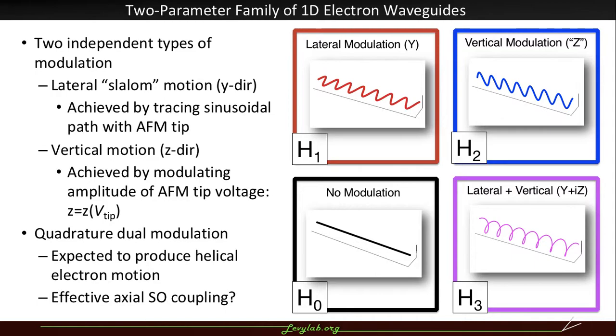The lateral modulation is achieved by tracing a sinusoidal path with the atomic force microscope tip. The vertical motion is achieved by moving in a straight line but then modulating the amplitude of the tip. And then we can do those two things in quadrature and we expect to produce helical electron motion and perhaps engineer an effective axial spin-orbit coupling.